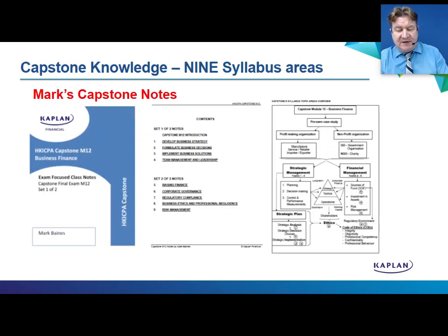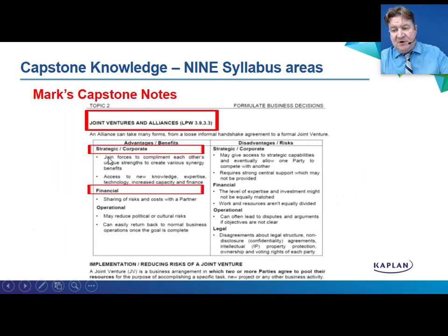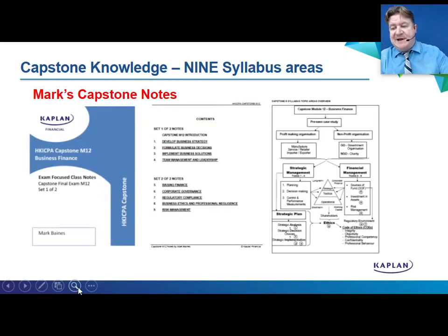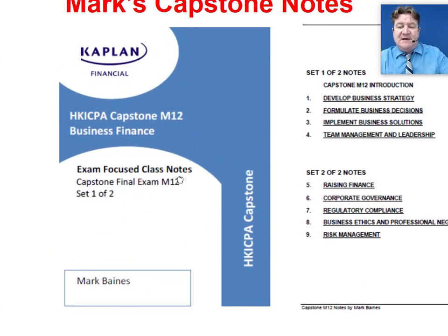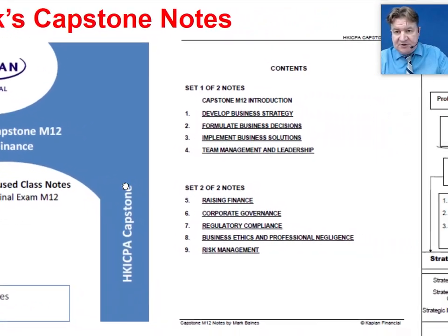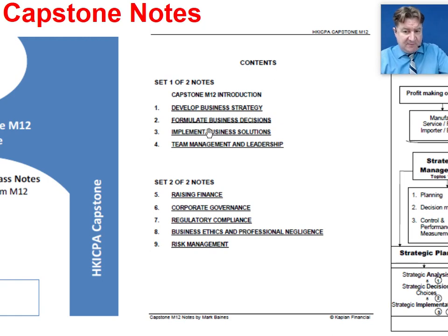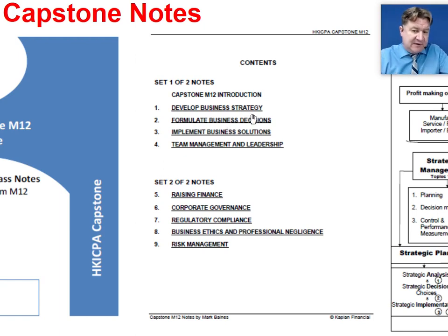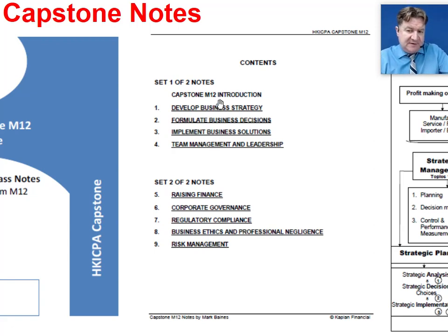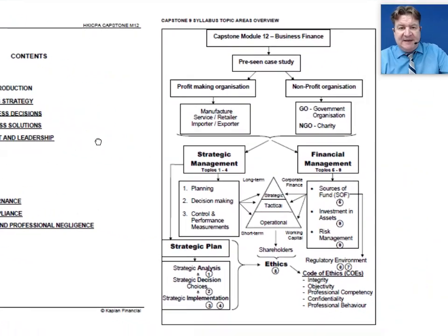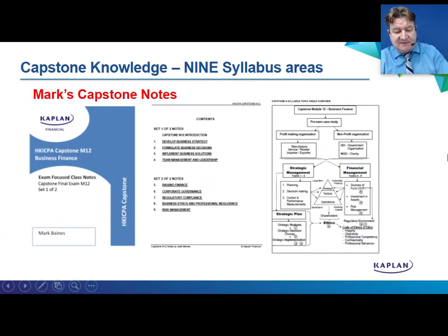So first of all, let's start with the actual knowledge. What you get is two sets of notes covering around about 300 pages. Here's set one, and you can see the logical flow. We first start with developing business strategy — thinking about where the business wants to go. Formulating business decisions is then thinking about how we're going to get there. And once we've decided what we want to do, next we start thinking about implementing business solutions. We go through these nine topic areas, linking up each of the areas as we go through, spending much more time on the detailed area topics.